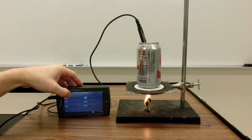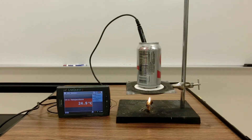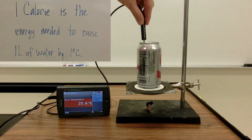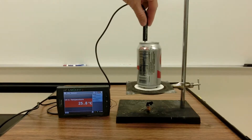Now here my screen dies, but we've gone up by about three degrees Celsius. The definition of a calorie is the energy it takes to make one liter of water go up by one degree Celsius. I'm going to lift this up off the bottom now so that I'm not reading the temperature of the can but of the water.